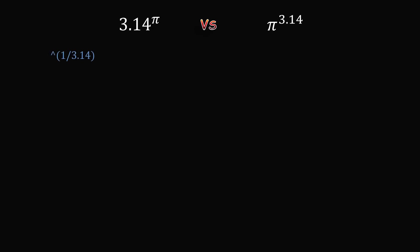Let us first raise both numbers to the power of 1 over 3.14. This operation will not change the direction of the inequality. The left number will become 3.14 to the power of pi over 3.14, and the right number will just become pi.